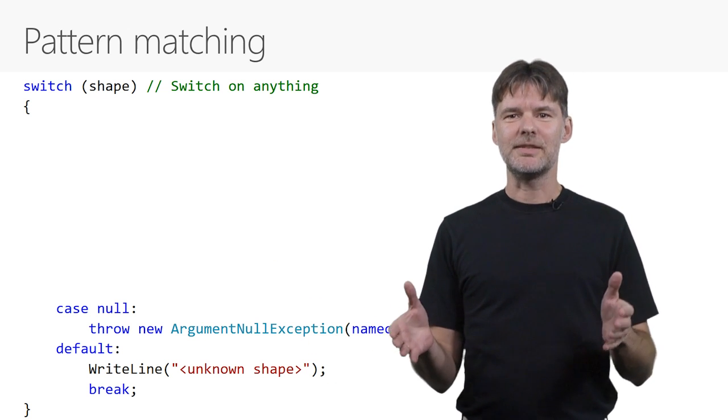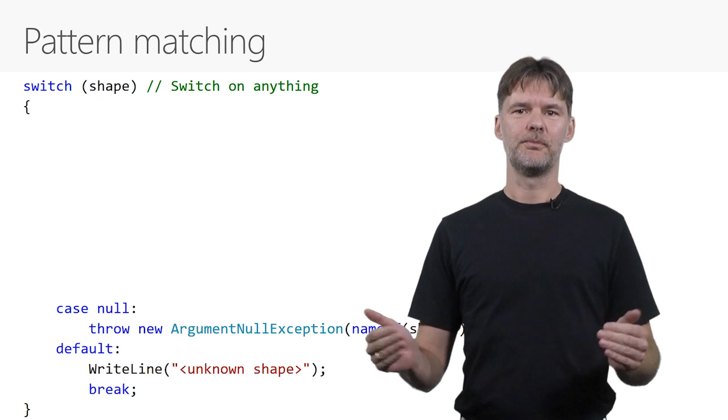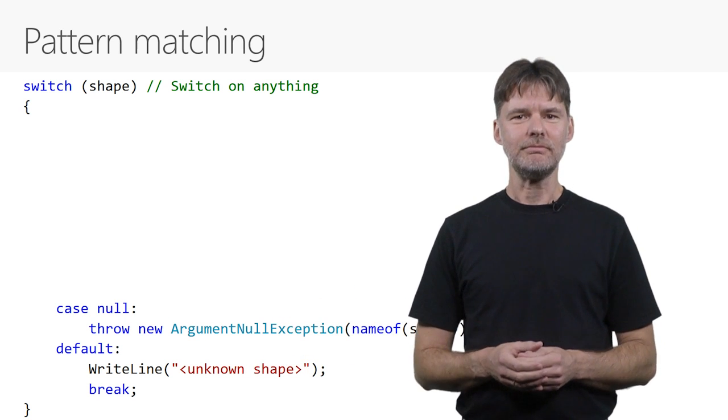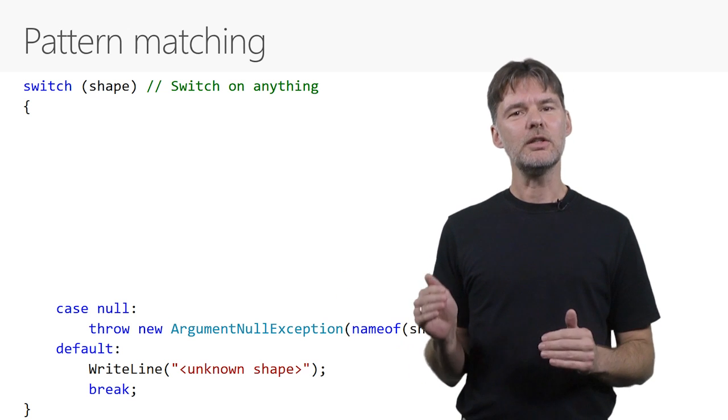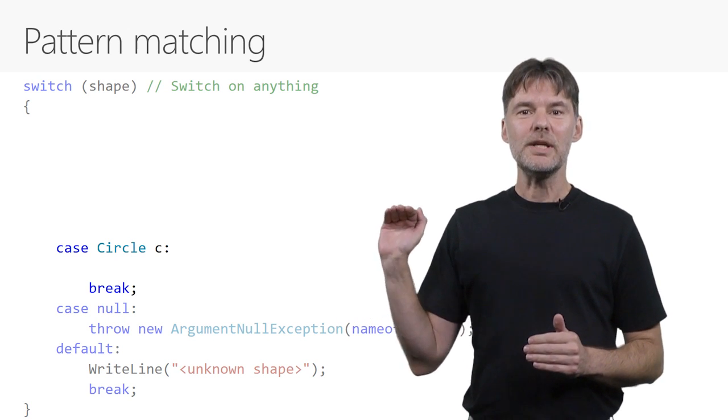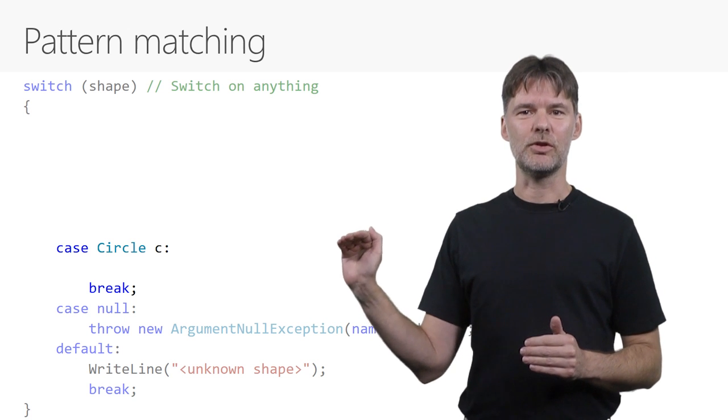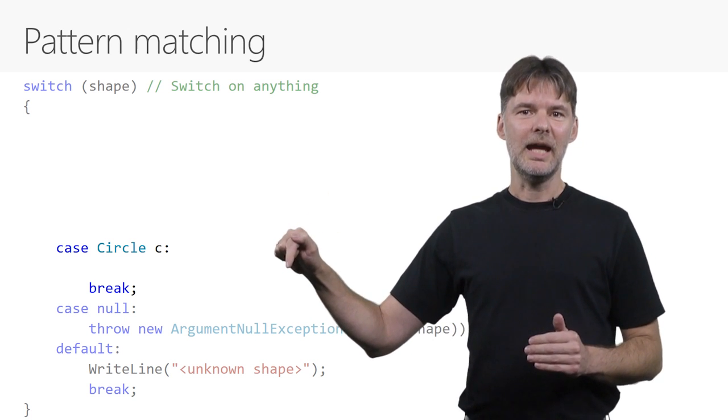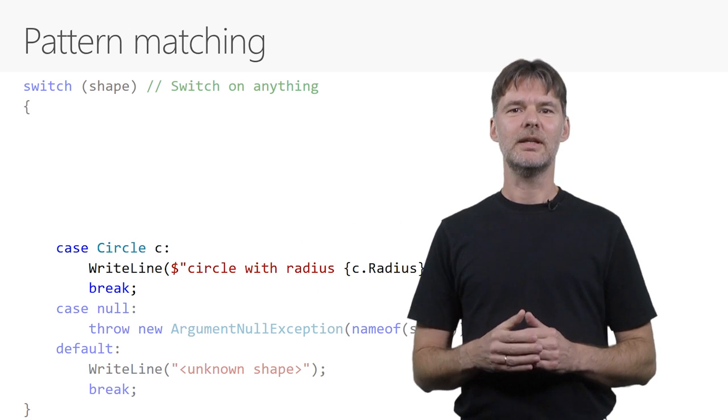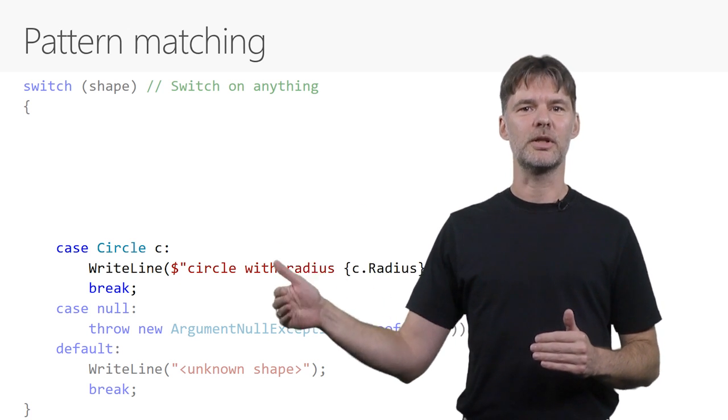But we've now generalized case clauses to hold patterns. So think of the null here as a constant pattern. That doesn't make any difference, of course, until we start using type patterns in case clauses. Here we are now checking to see if the incoming shape is a circle. And if it is, we can call it c, and we can use it as a circle in the body of the case, getting at the circle-specific radius property, for instance.